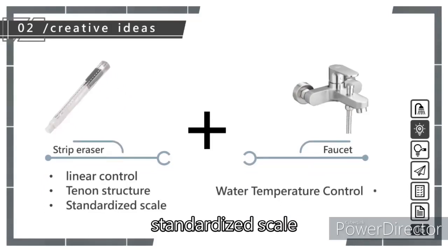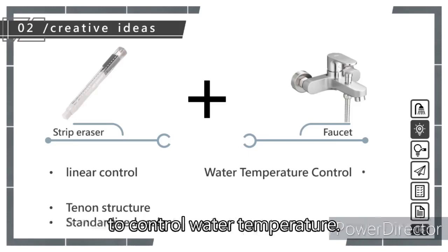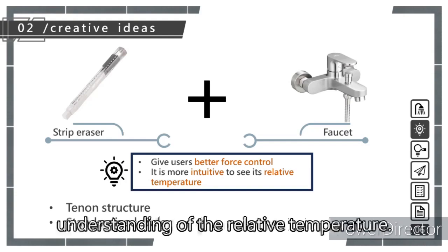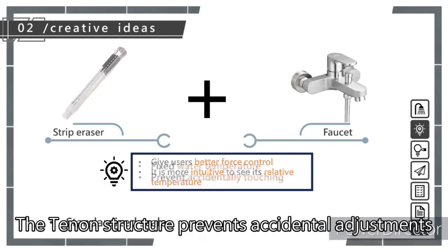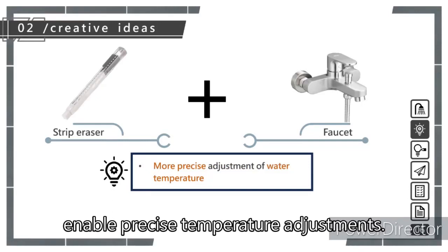The linear control, standardized scale, and tenon structure of the eraser were combined with the ability of the shower handle to control water temperature. This integration allows users to exert better control and have a more intuitive understanding of the relative temperature. The tenon structure prevents accidental adjustments, and the standardized scale enables precise temperature adjustments.